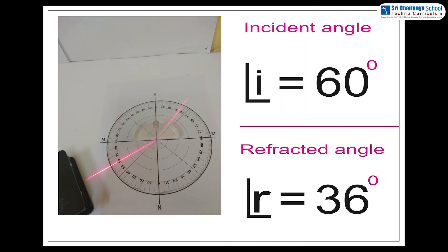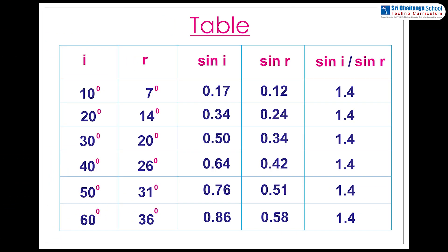Note down these values and tabulate in the given tabular form. Find sine i and sine r values for the known angle of incidence and angle of refraction. And also, find the ratio of sine i and sine r for each and every case. And interestingly, you can observe here, the column of sine i and sine r ratio is constant.